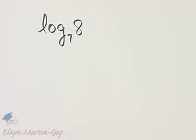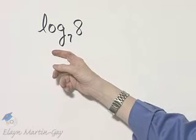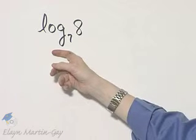We want to approximate this to four decimal places, so we'll use the change of base formula. Normally on a calculator, you have two types of buttons: log base 10, or common logs, and log base E, that's natural logs.